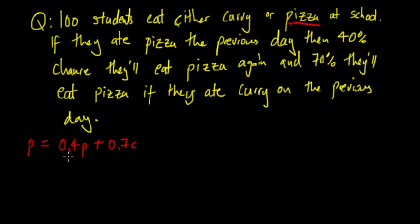And then 70% of the people who eat curry will eat pizza later, so that's why it's 0.7c.